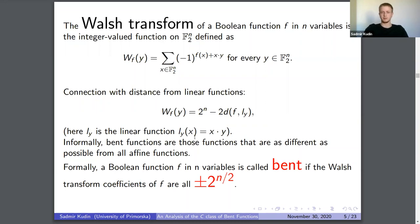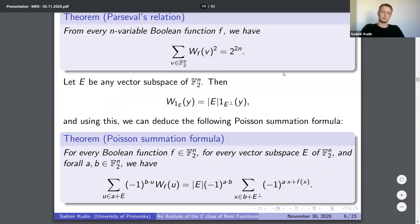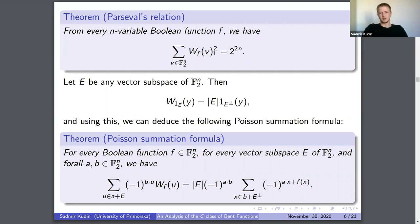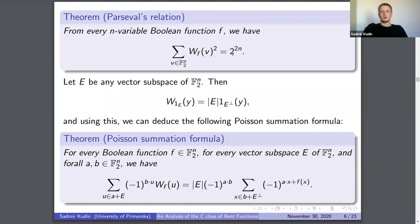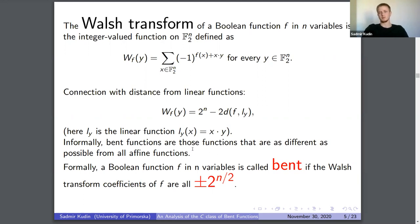There is a Parseval relation for the Walsh transform: the sum over the whole space of the squares of the Walsh coefficients equals 2^(2n). So if a function is not bent, it will have some Walsh coefficient different from ±2^(n/2), and you can find a linear function such that the distance from your function to that linear function is less than the bent distance.